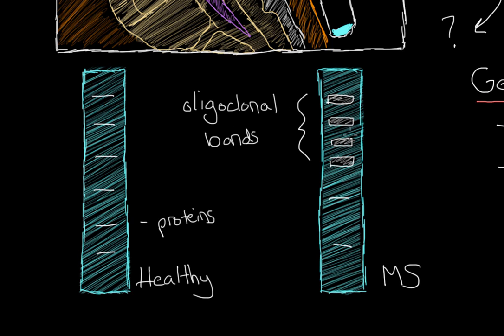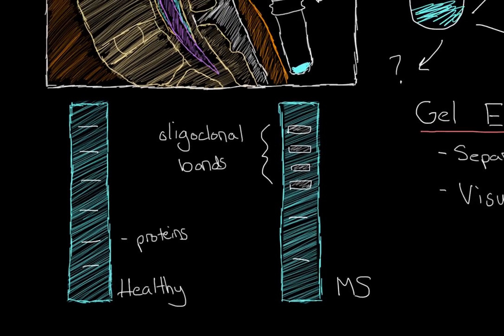When you see these oligoclonal bands, that's actually pretty indicative that there are a lot of antibodies in the sample. Because you have a lot of antibodies in the sample, that means you have a lot of antibodies in your cerebrospinal fluid. That tells us that the immune system is really active in the central nervous system.